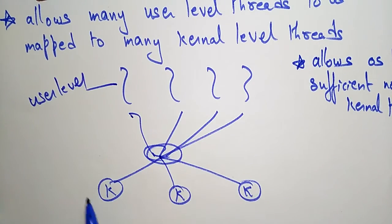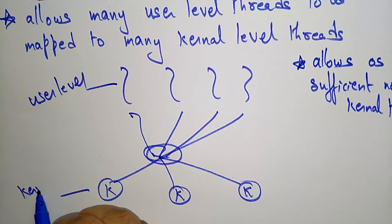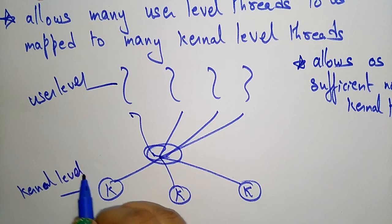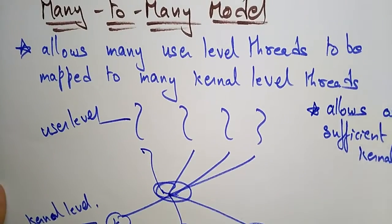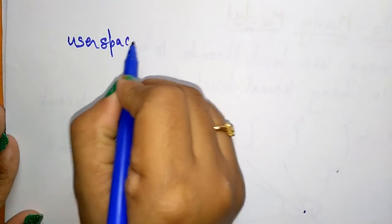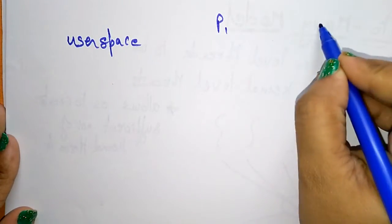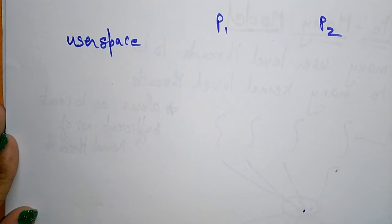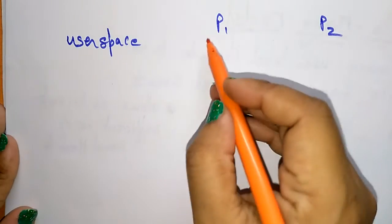Let me explain the form. Suppose this is the user space - the user space you are taking like two processes, P1 and P2.